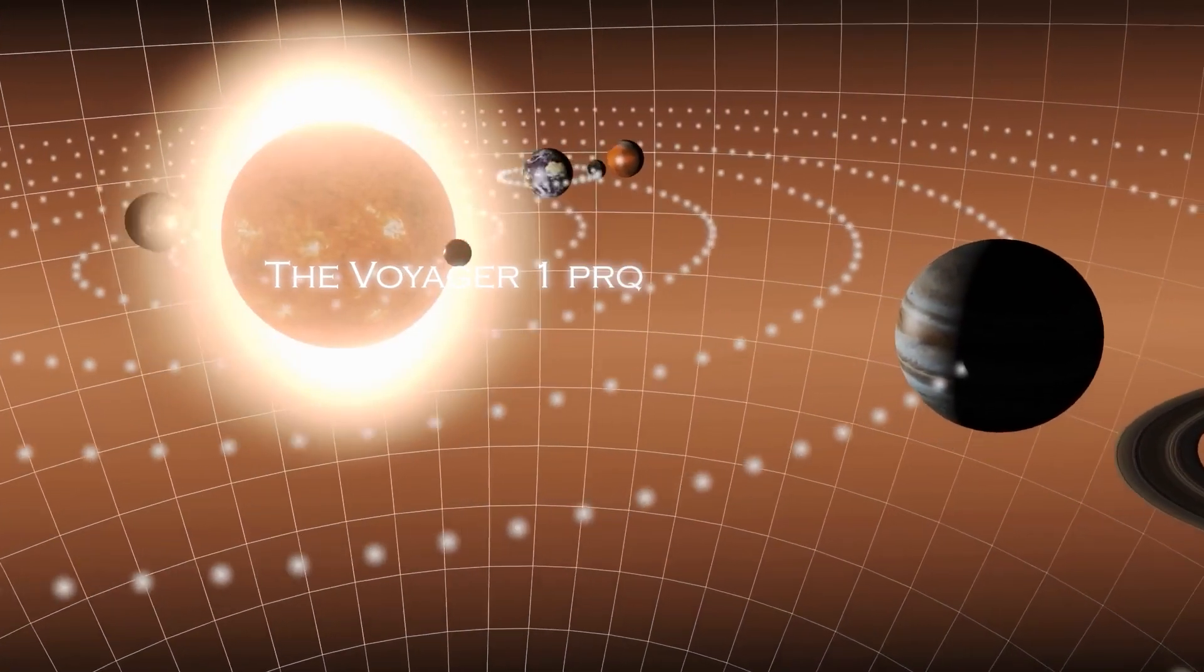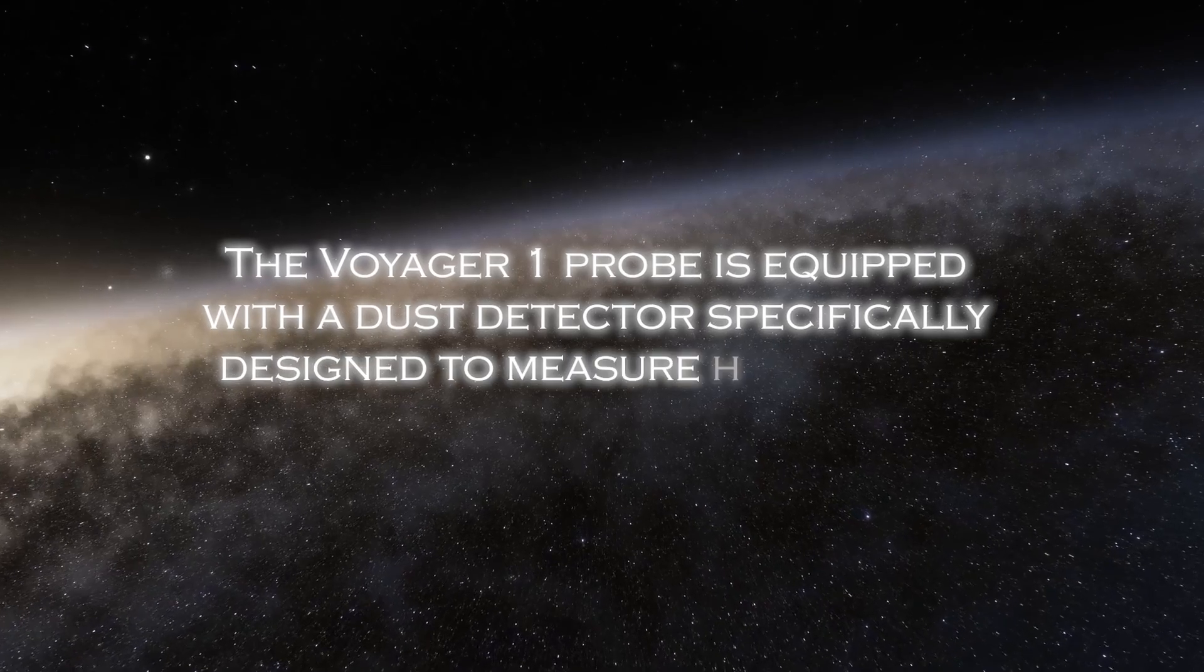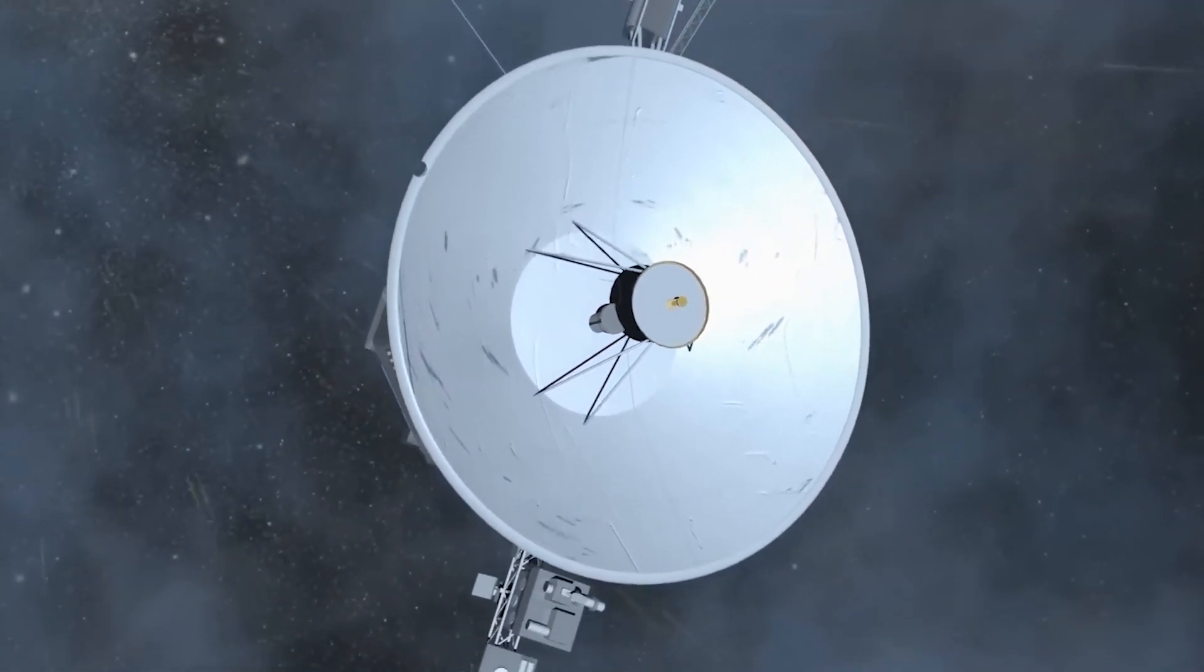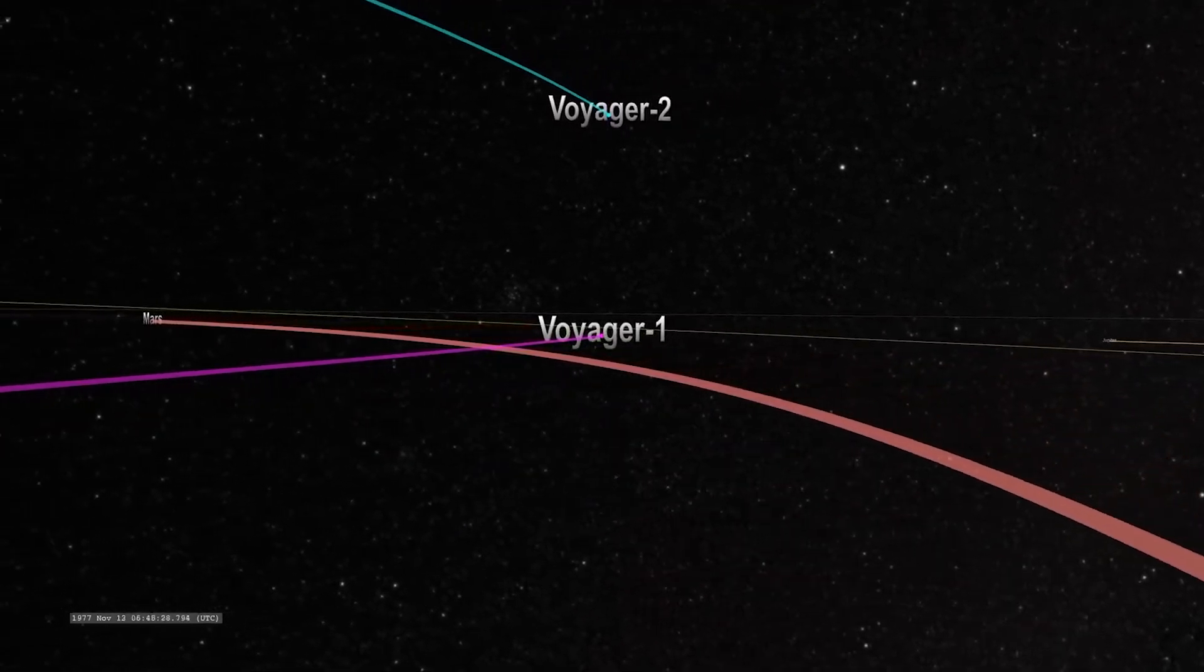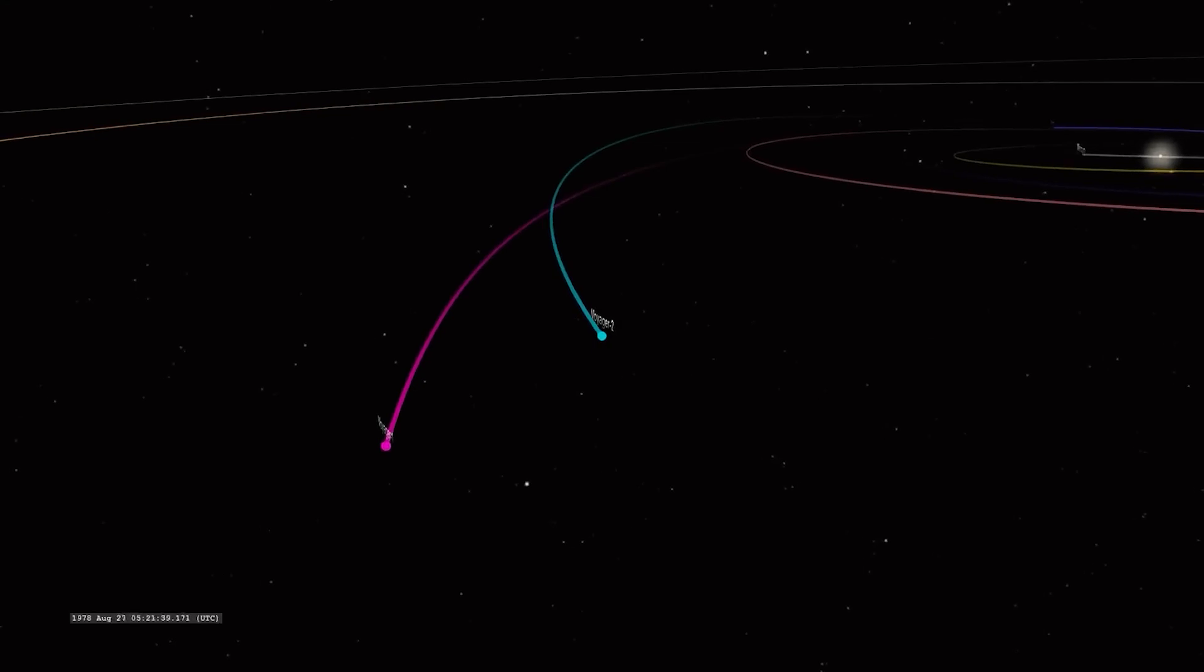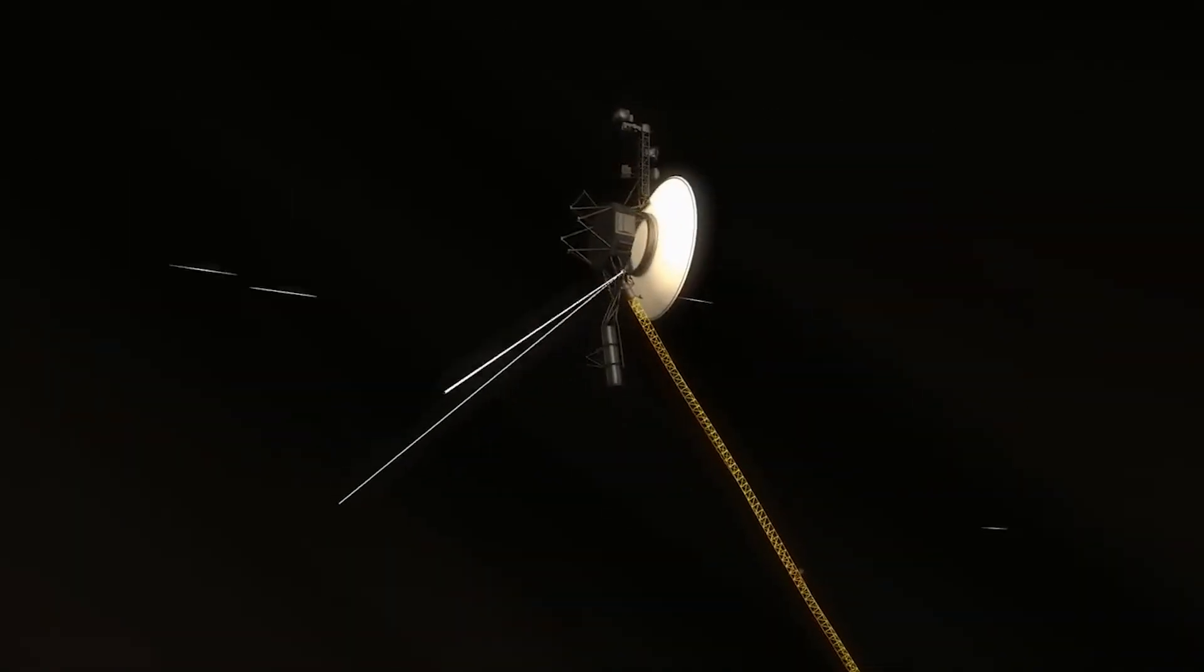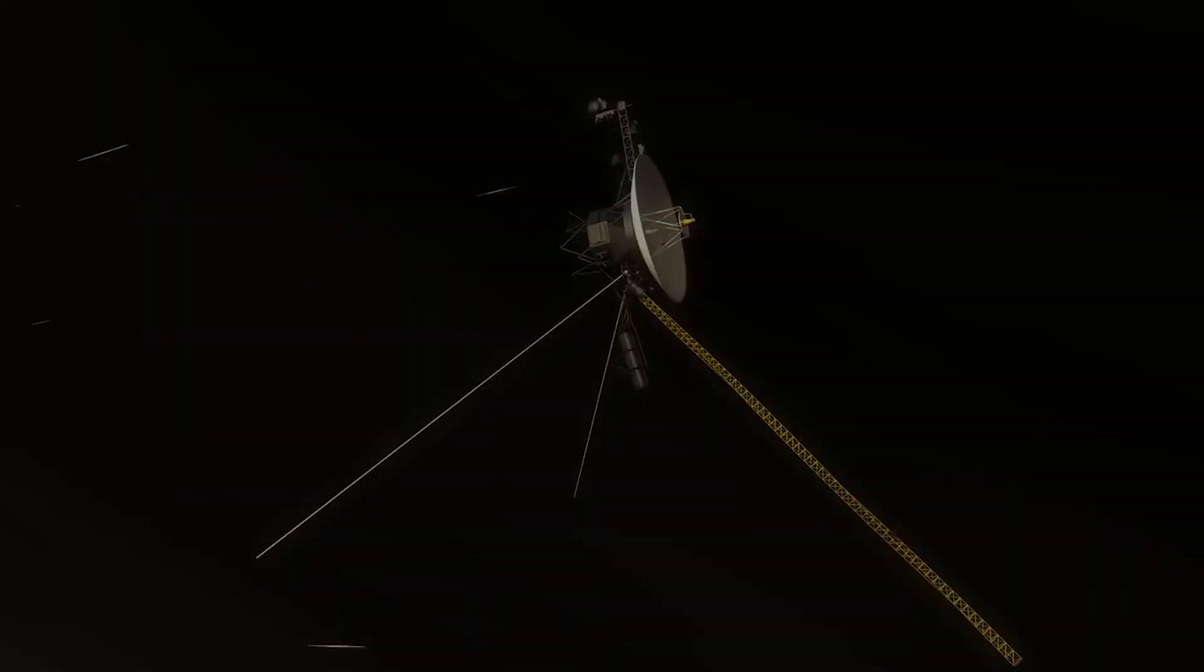The Voyager 1 probe is equipped with dust detectors, specifically designed to measure the density of interstellar dust in deep space. However, communication with Voyager 1 has become more difficult due to the limited resources NASA's global antenna system has to receive the mission signals. This has resulted in less frequent communication opportunities than they used to be. Despite this, a fascinating discovery recently emerged in the midst of data stream.